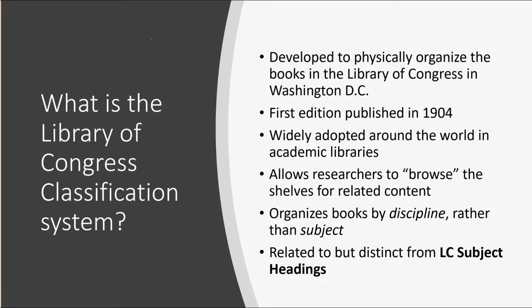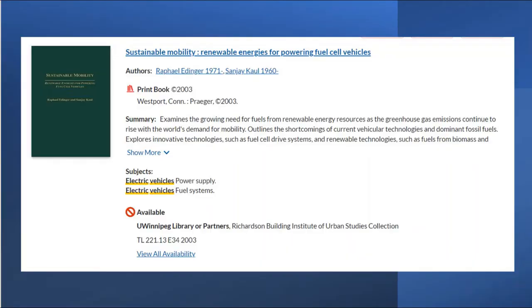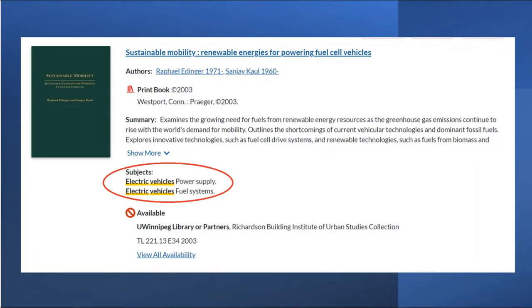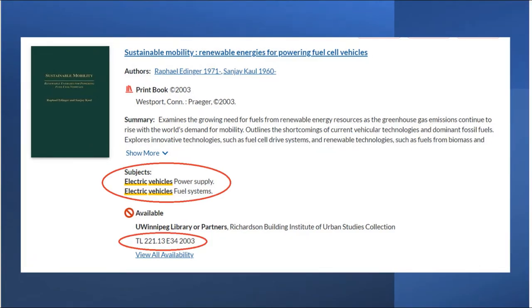But this is a very important point: it organizes books by discipline rather than by subject, and the numbers are related to but distinct from Library of Congress subject headings. So when we find a book in the library catalog, we will see that there are subject headings assigned to it and then the Library of Congress classification number. Two books may have exactly the same subject headings assigned to them, but they may be located in very different parts of the library.